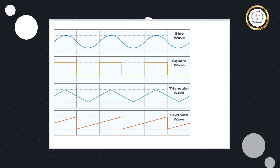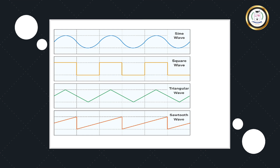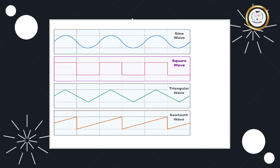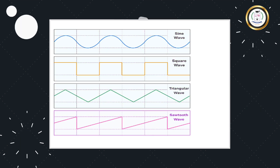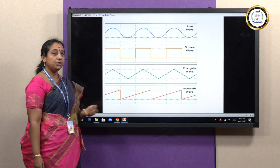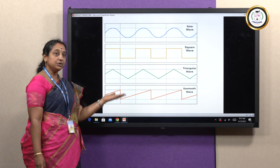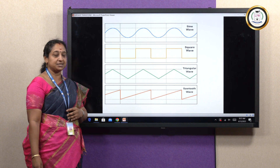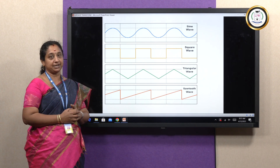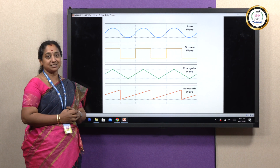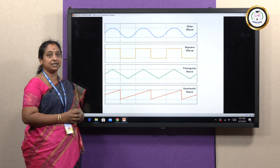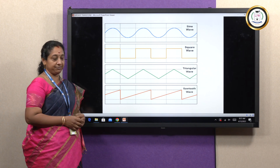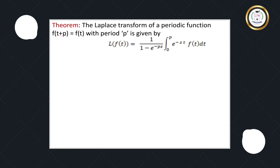We will discuss different wave functions such as the sine wave, square wave, and triangular sawtooth wave, and apply the Laplace Transform to all of them. First, we need to derive the Laplace Transform theorem for periodic functions.